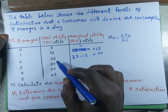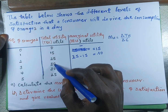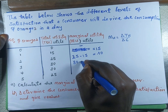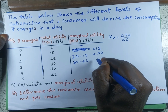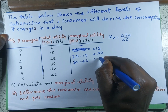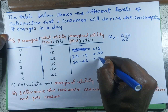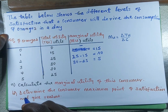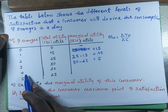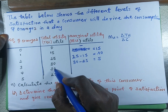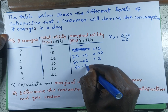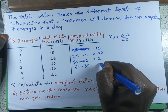For the third orange, we are going to look for the extra utility after consuming the third unit, which gives us 30 minus 25, equal to 5 utils. And for the fourth orange, we need to look for the difference, so we are going to have 30 minus 30, which gives us zero.